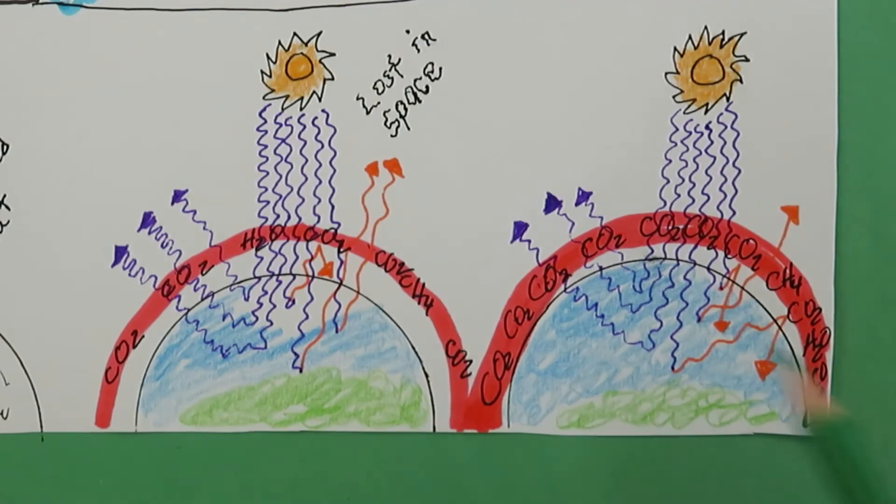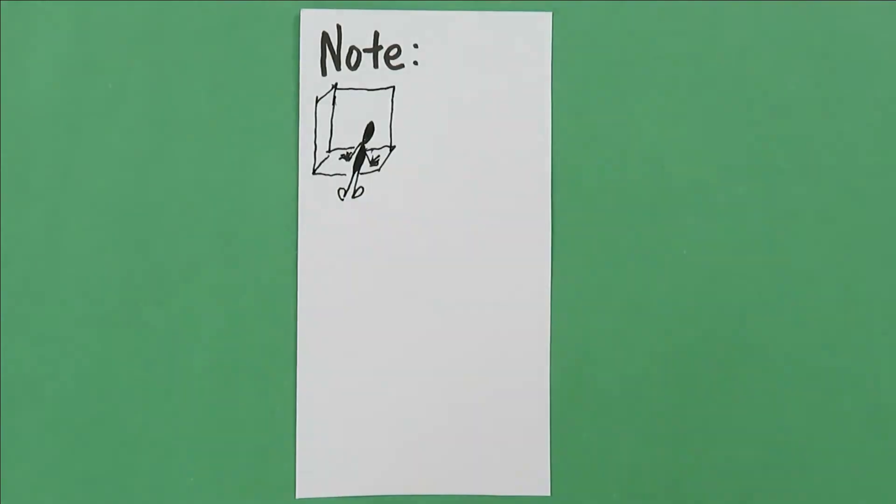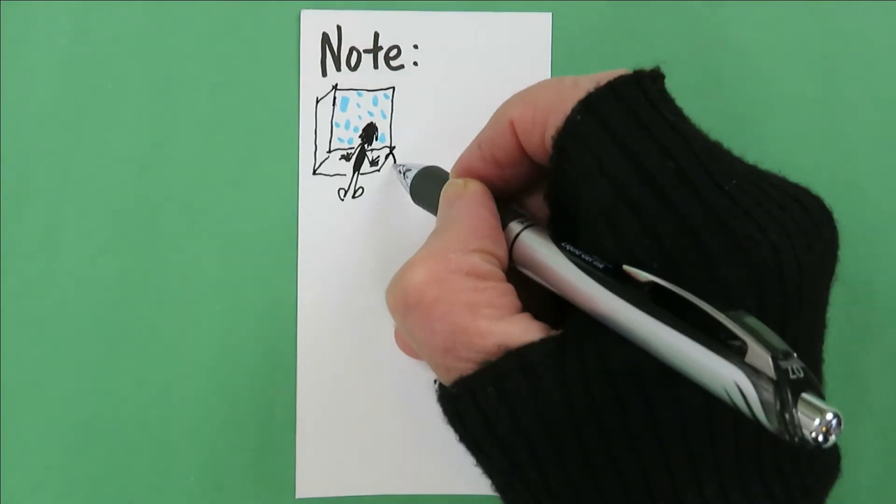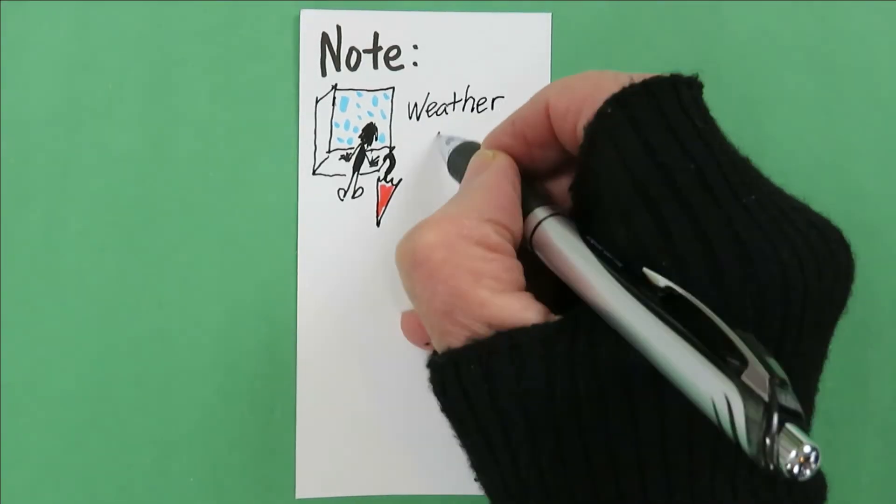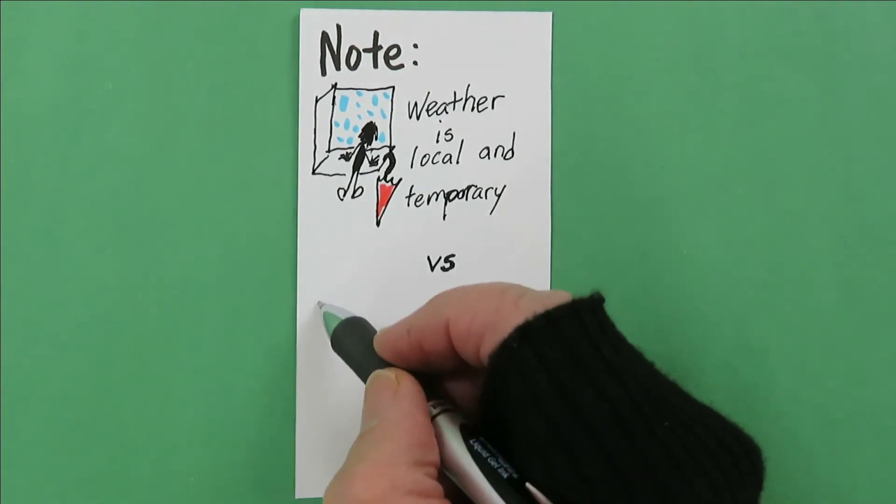Let's not confuse weather with climate. Weather is local and temporary. It's what you see when you look out the window. Weather tells you what to wear that day, when to take an umbrella. Climate, on the other hand, is the long-term average of weather over many years. Like 30 years.